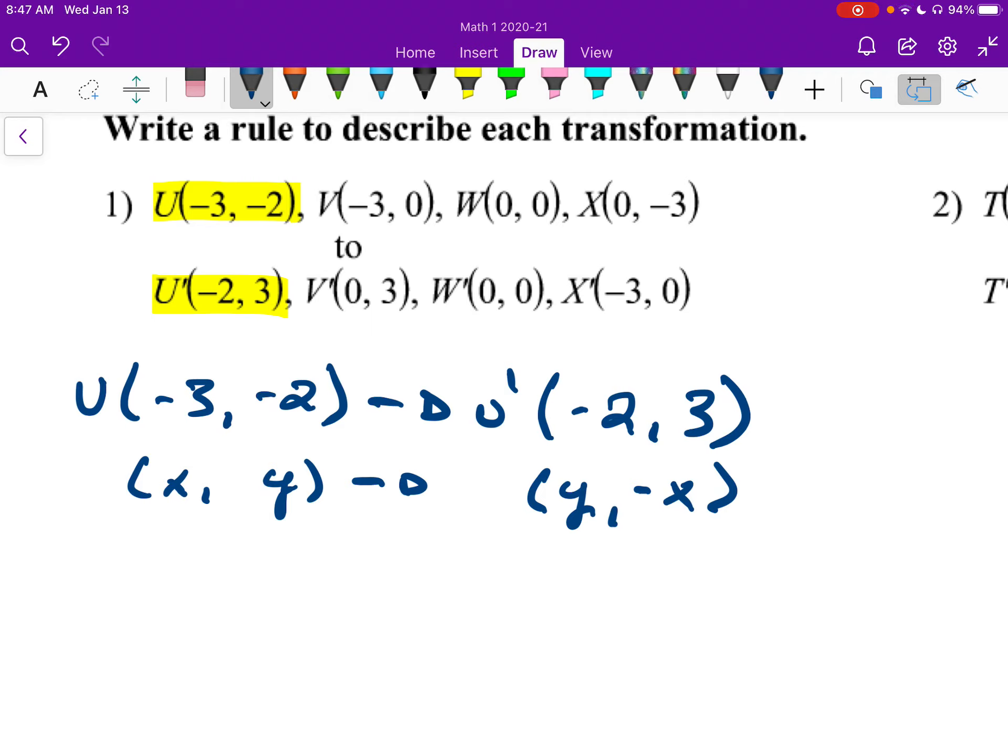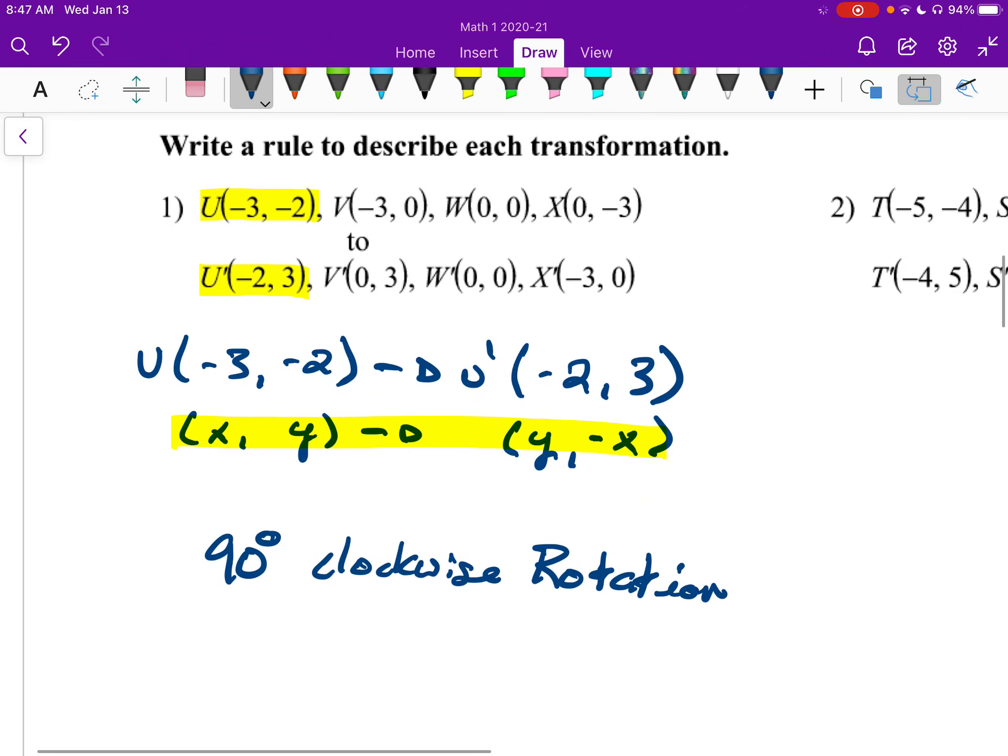And then we want to look and see, well, what does this represent? On our rules that we have up there, which one is represented by this? And let me look there. I think it will be a 90-degree clockwise turn. Yep. So it will be a 90-degree clockwise. There we are. So you can probably see there that it's going to be very beneficial to have all of those formulas written down in one spot.